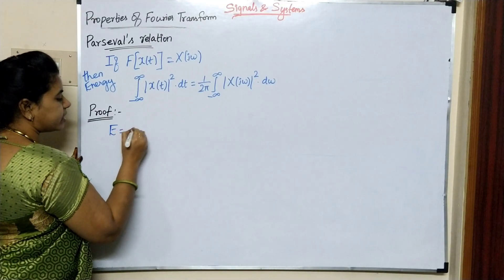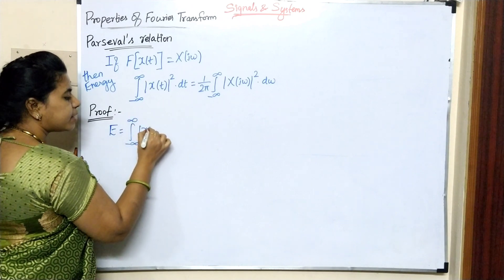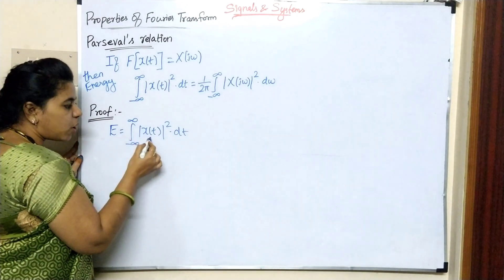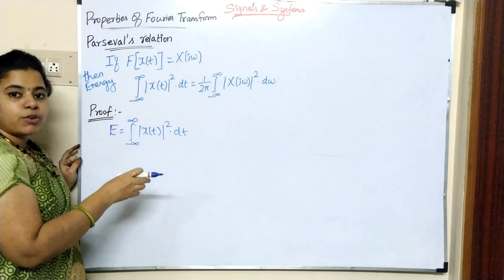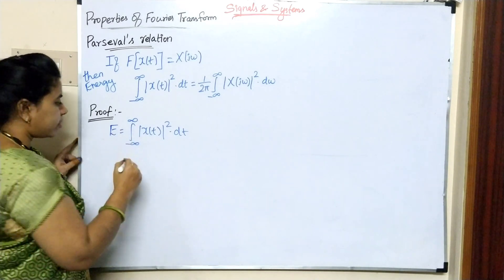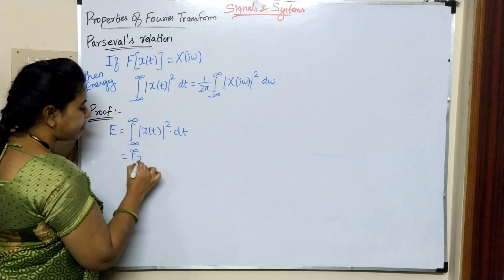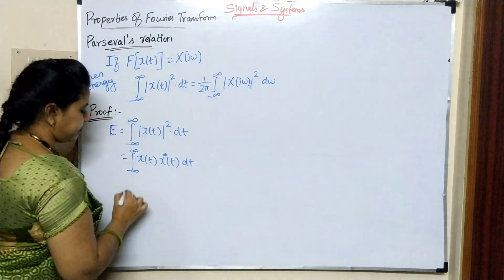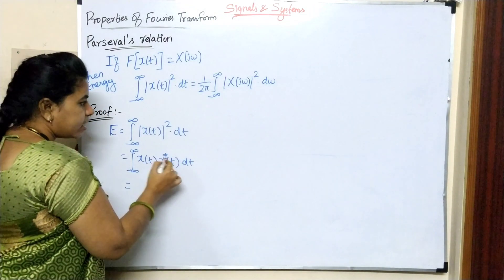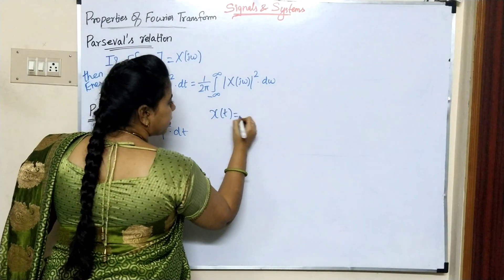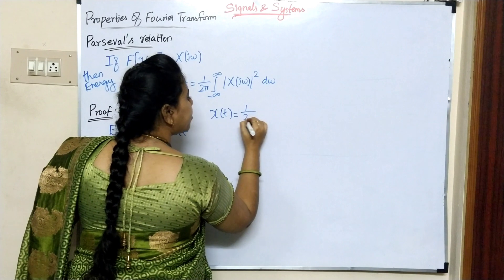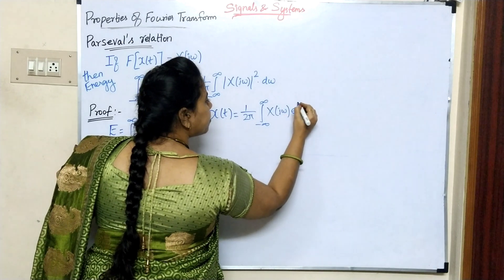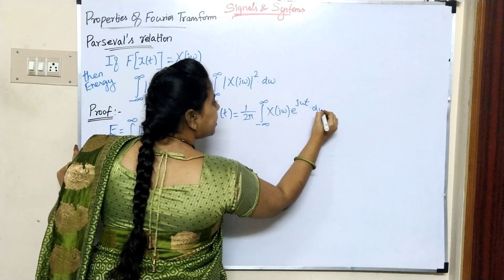Proof: energy equals integral minus infinity to infinity modulus of x of T whole square into dt. The modulus of x of T whole square equals x of T into conjugate of x of T. So energy equals integral minus infinity to infinity x of T conjugate of x of T into dt. Now, x of T equals inverse Fourier transform formula: 1 divided by 2pi integral minus infinity to infinity x of j omega e to the power j omega t into d omega.